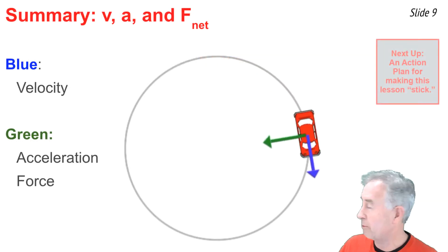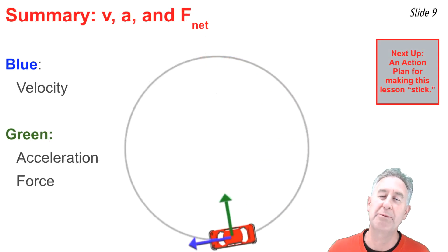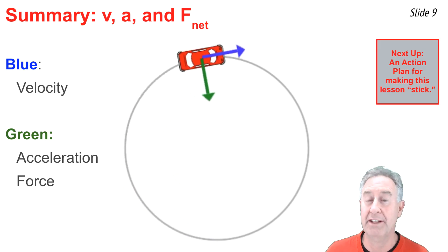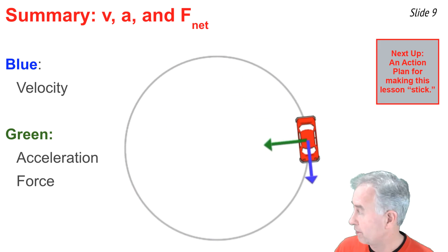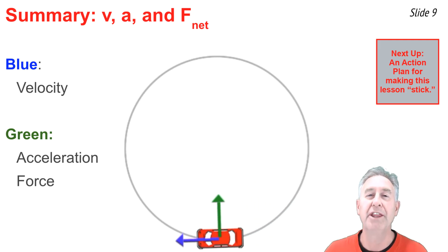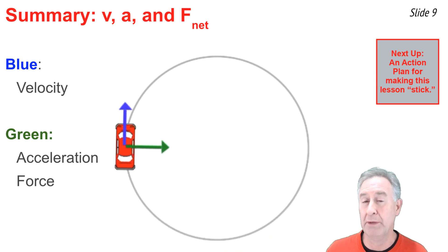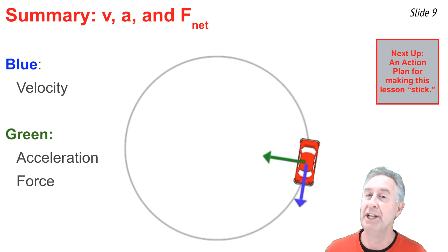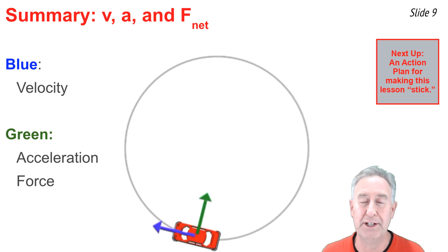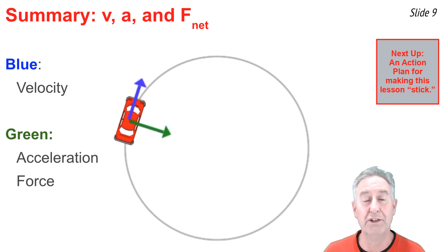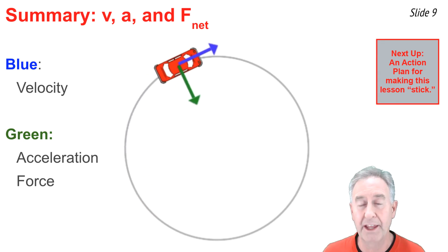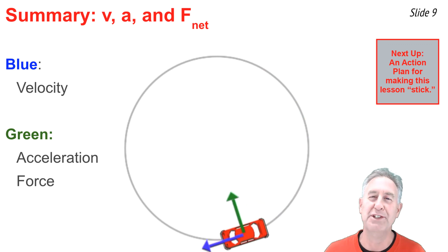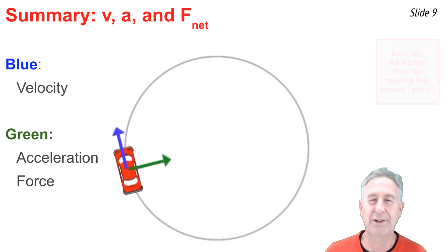We will use this animation to summarize what we've learned about circular motion. For an object moving in a circle, there is a tangential velocity illustrated by the blue arrow. There is an inward net force to meet the centripetal force requirement, preventing the object from traveling tangent to the circle and instead keeping it on the circular path. According to Newton's second law, the acceleration is in the same direction as the net force — towards the center of the circle.